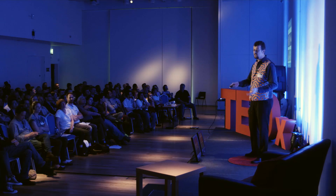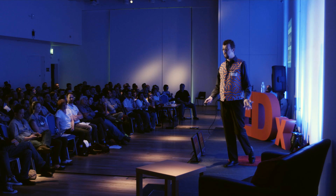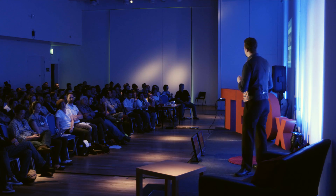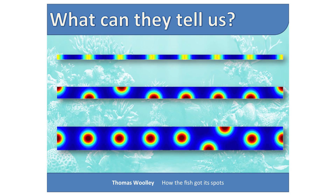But what can the mathematics tell us about the biology? That should be what we aim for as mathematical biologists — it's no good just reproducing what nature does. The mathematics has to predict something we can test. One thing this theory predicts is that as you increase the size of the domain, your pattern should get more complex. A very thin domain gives you nothing at all; slightly wider, you get stripes; wider still, half spots; wider still, full spots; and if you make it wider and wider, more and more spots.